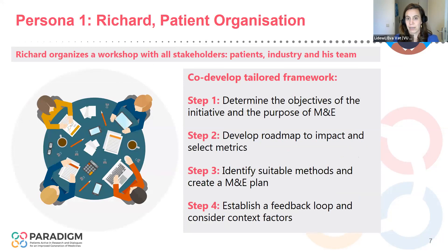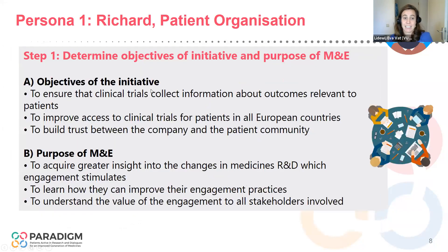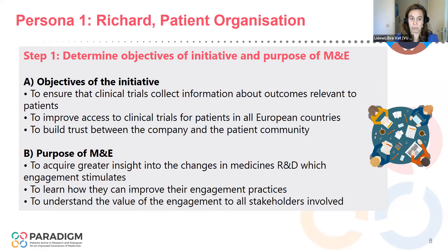The first step is always to bring all the people you're working with together — it can also be online — to discuss a few things and together walk through those four steps. In this particular case, everyone was asked: what do you hope to achieve? One of the patients shared that they really wanted to see improved access to clinical trials in all European countries. One of the industry partners shared that they want to see that they are building trust with the patient community. So everyone on the table may have different objectives — that's important to keep in mind when it comes to monitoring and evaluation.